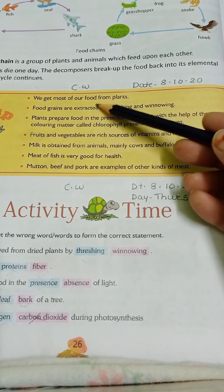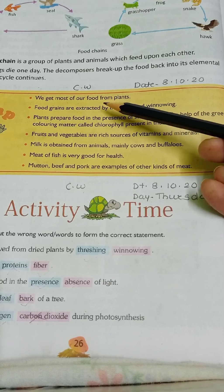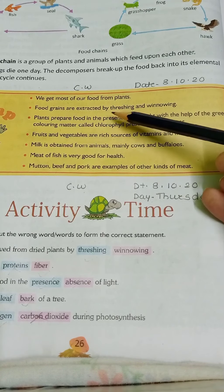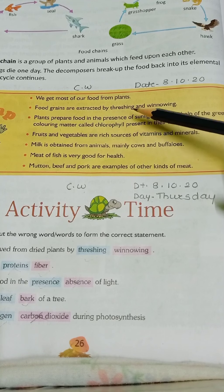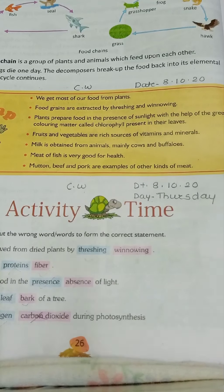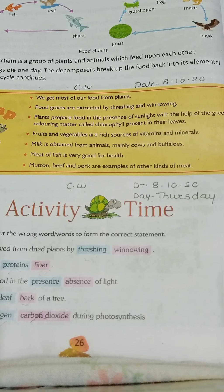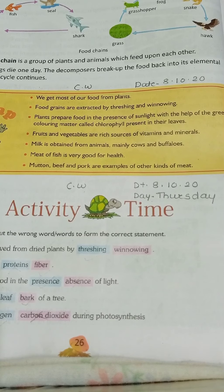We get most of our food from plants. Food from grains is extracted by threshing and winnowing. The process in which grains are separated from the stalk is called threshing, and the process in which grains are separated from the chaff with the help of wind is called winnowing.